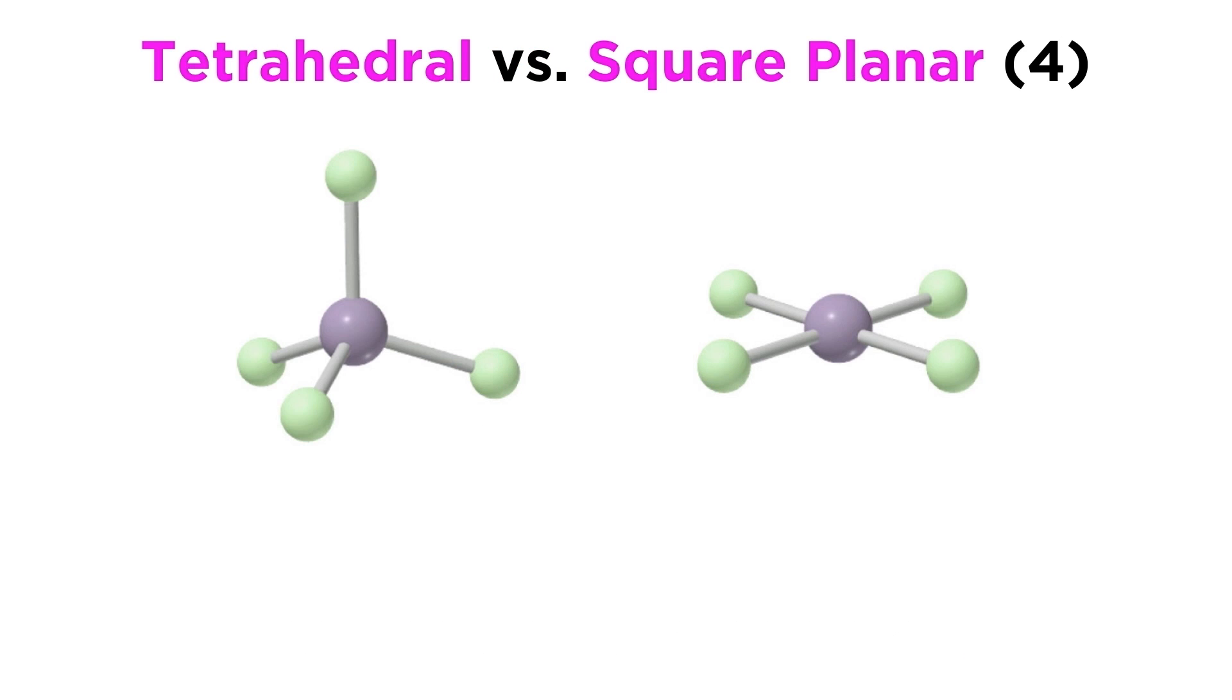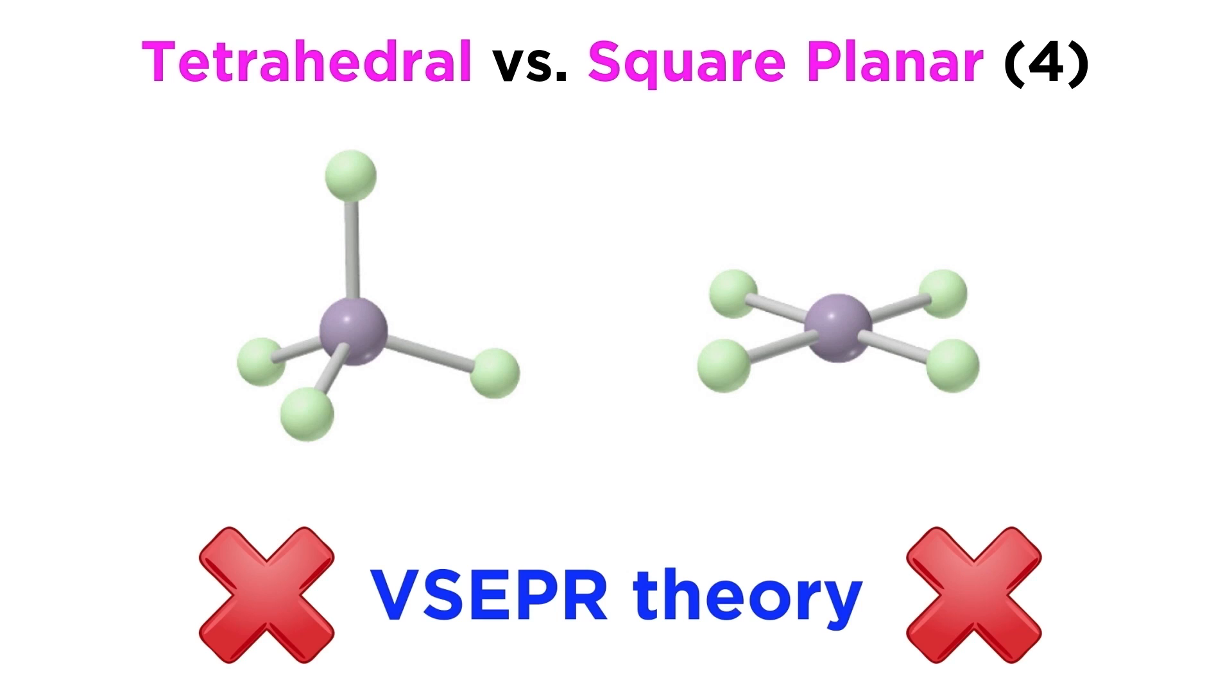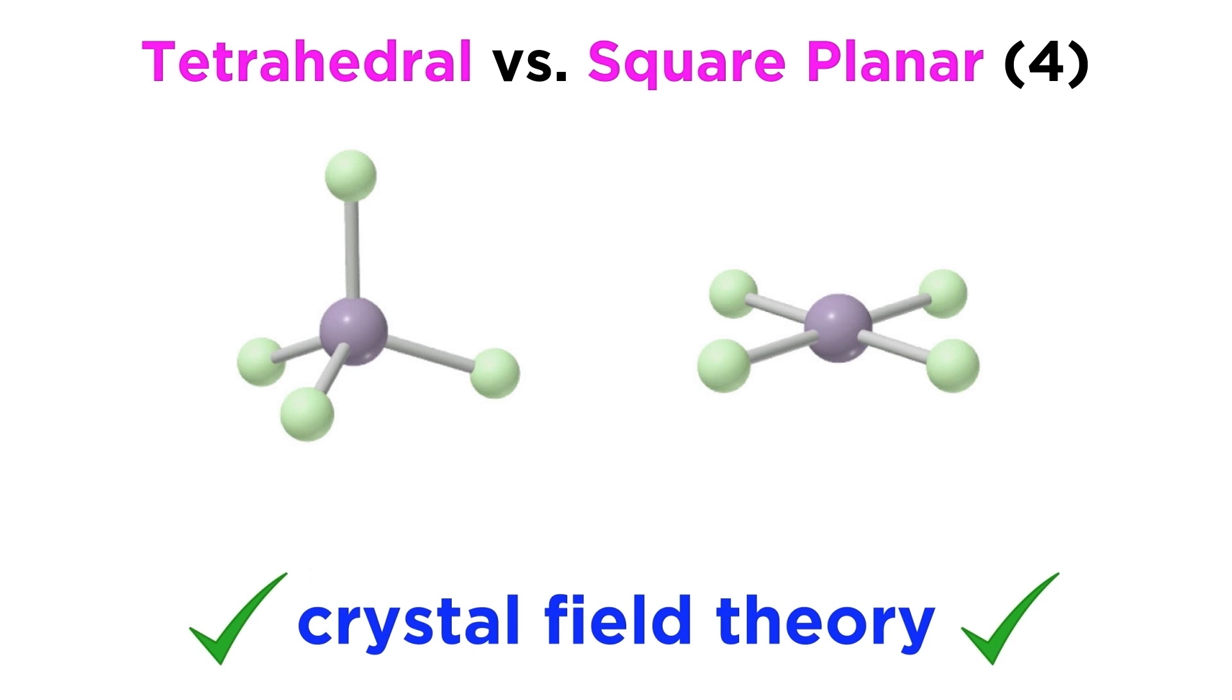Going back to compounds with a coordination number of 4, once again, both tetrahedral and square planar geometries are possible. We can't predict which will occur by VSEPR. We will have to use crystal field theory in order to predict this, and the factor that is largely responsible is the number of d-electrons in the valence shell for the central metal atom. But we will get to that in a moment.